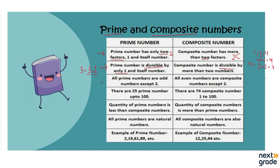The next comparison is that all prime numbers are odd numbers except two. Odd numbers have already been discussed in previous videos. The odd numbers are: one, three, five, seven, nine, and so on. These are the odd numbers.